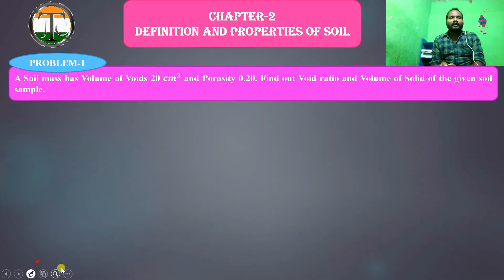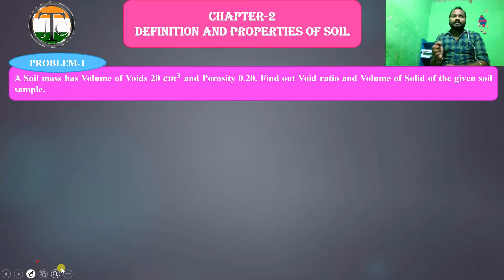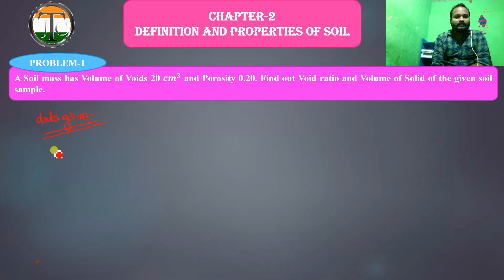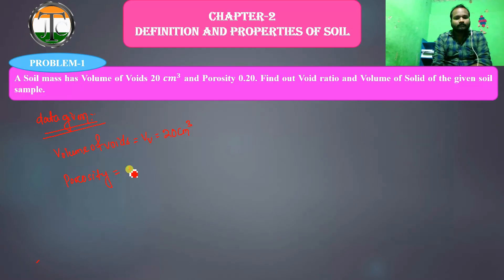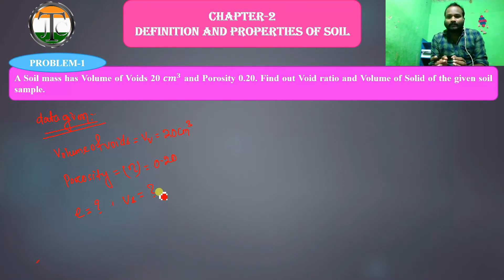A soil mass has volume of voids equal to 20 cubic centimeters and porosity 0.20. We have to find out the void ratio and volume of solids of the given soil sample. Data given: volume of voids Vv equals 20 cubic centimeters, porosity represented by eta equals 0.20. We have to calculate the void ratio and the volume of solid.